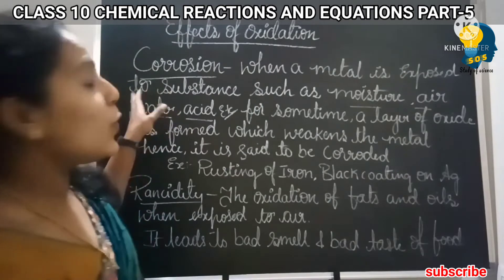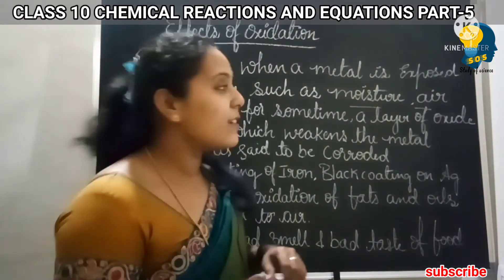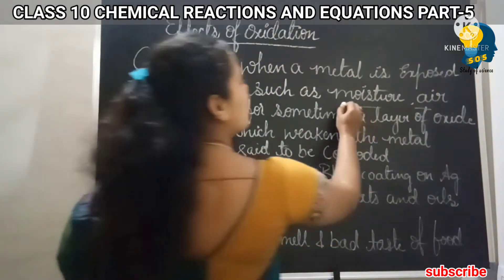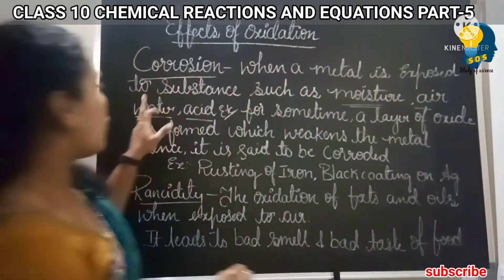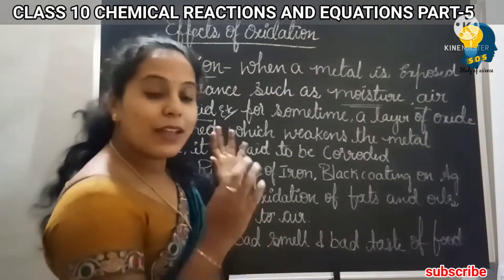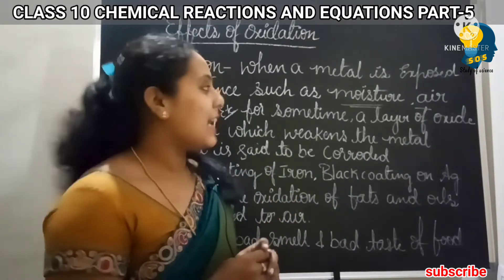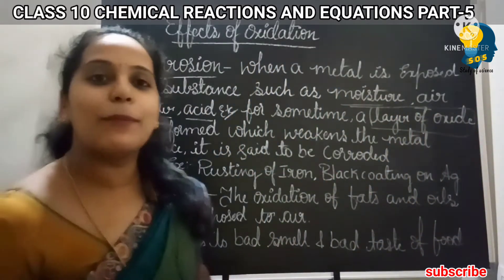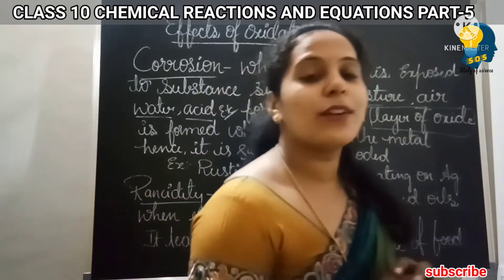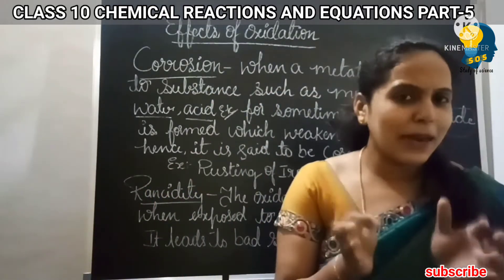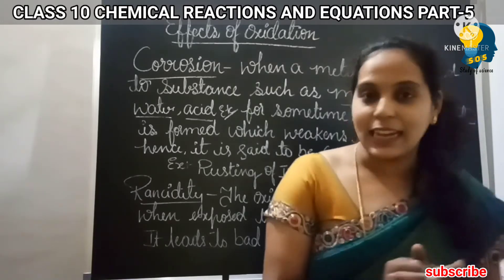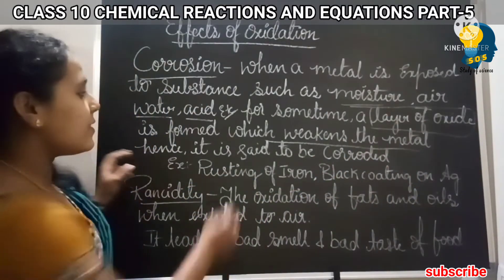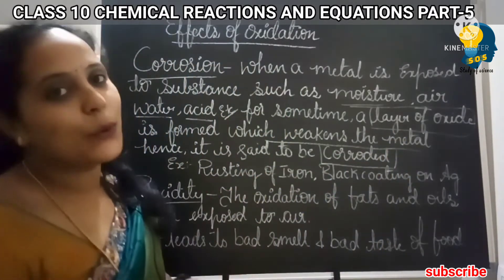What is meant by corrosion? Corrosion is a process where metal is exposed to substances such as moisture, air, water, or acid. When exposed to these climatic conditions, there is a formation of an oxide layer on the metal. As a result, the metal becomes weakened — a layer of oxide forms which weakens the metal. Hence, this condition is said to be corrosion, or we say the metals get corroded.